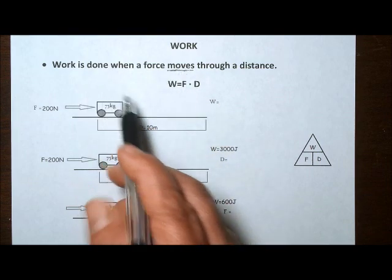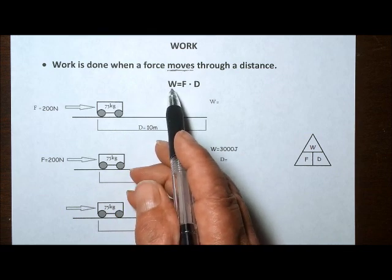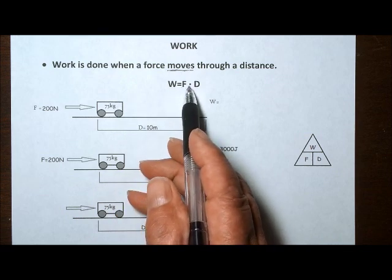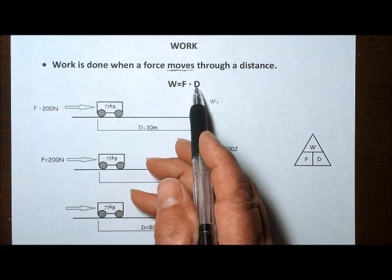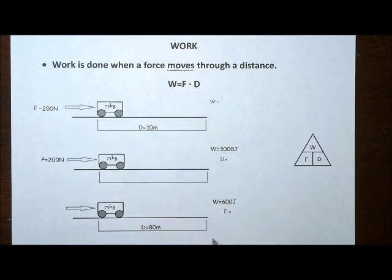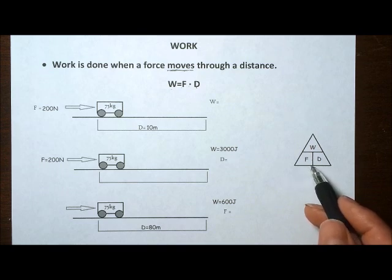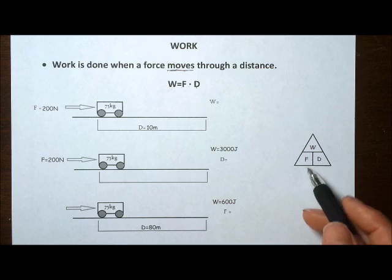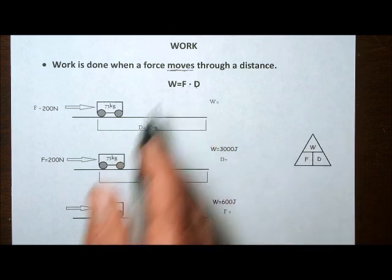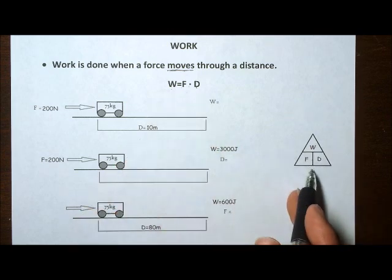The equation for work: work is simply force times distance. Now if you recall in previous lessons, we introduced something called the magic triangle. That helped us rearrange equations to solve for the missing variable. Using the work equation, we can use that magic triangle again.